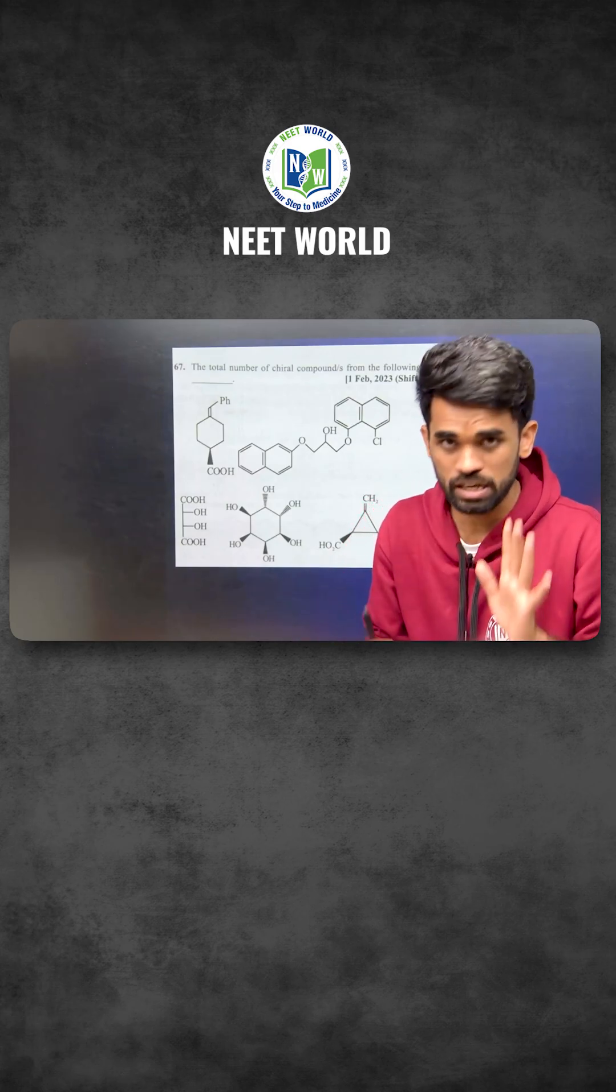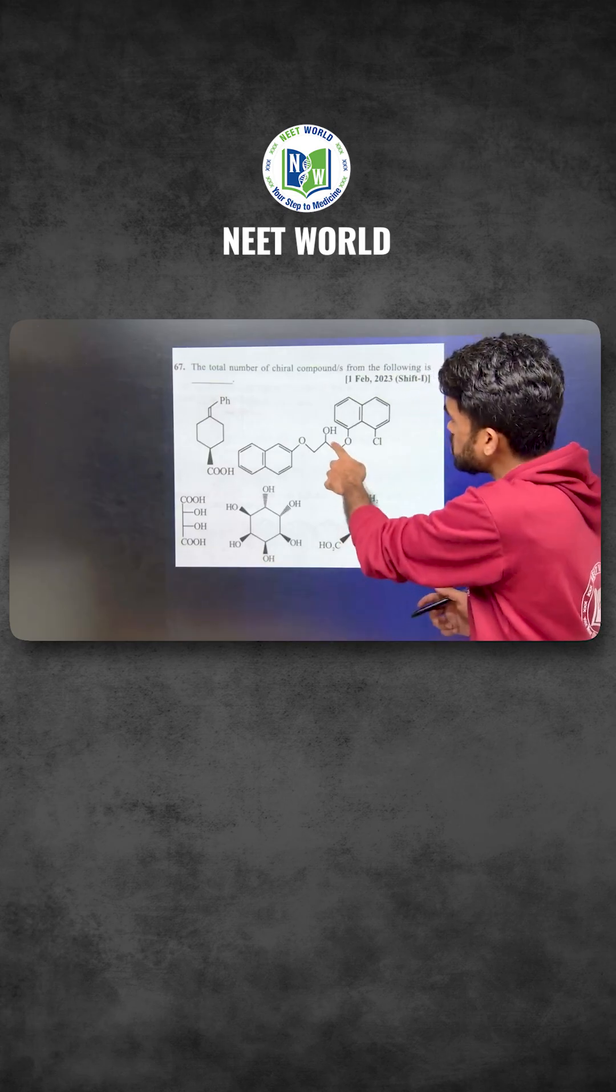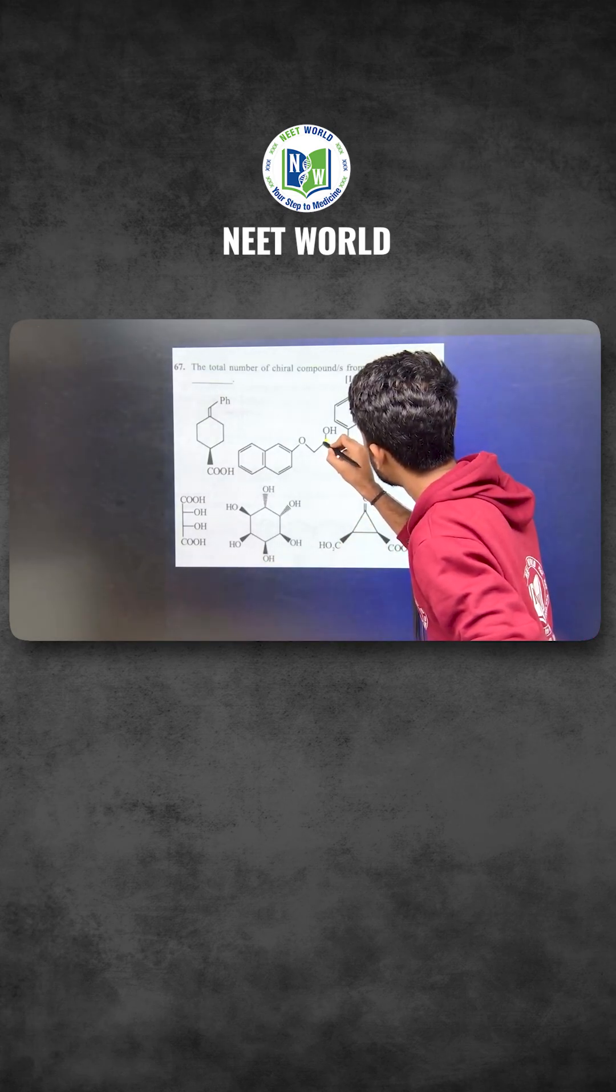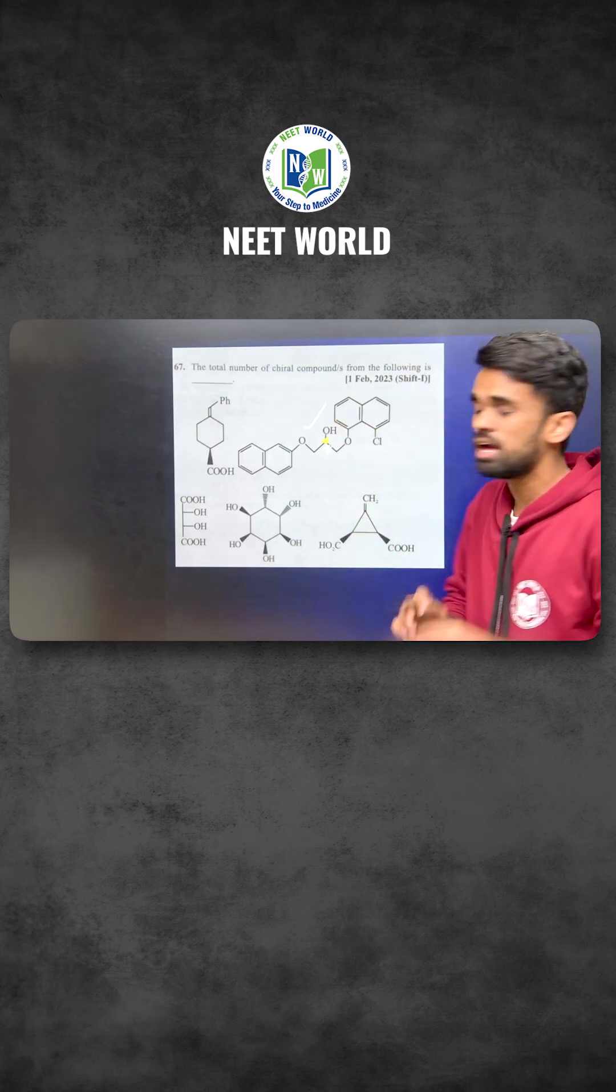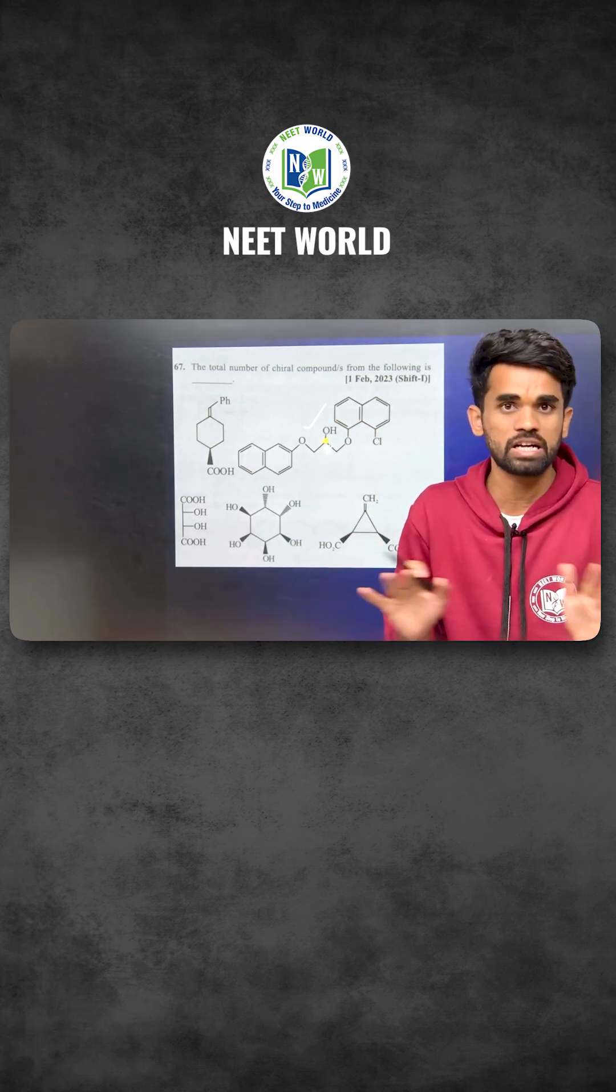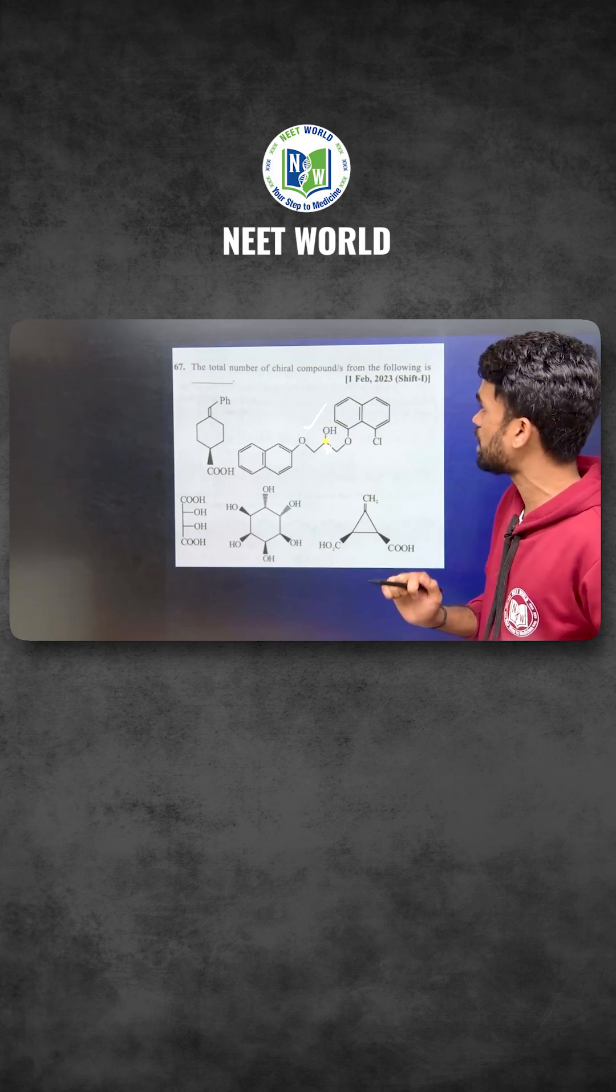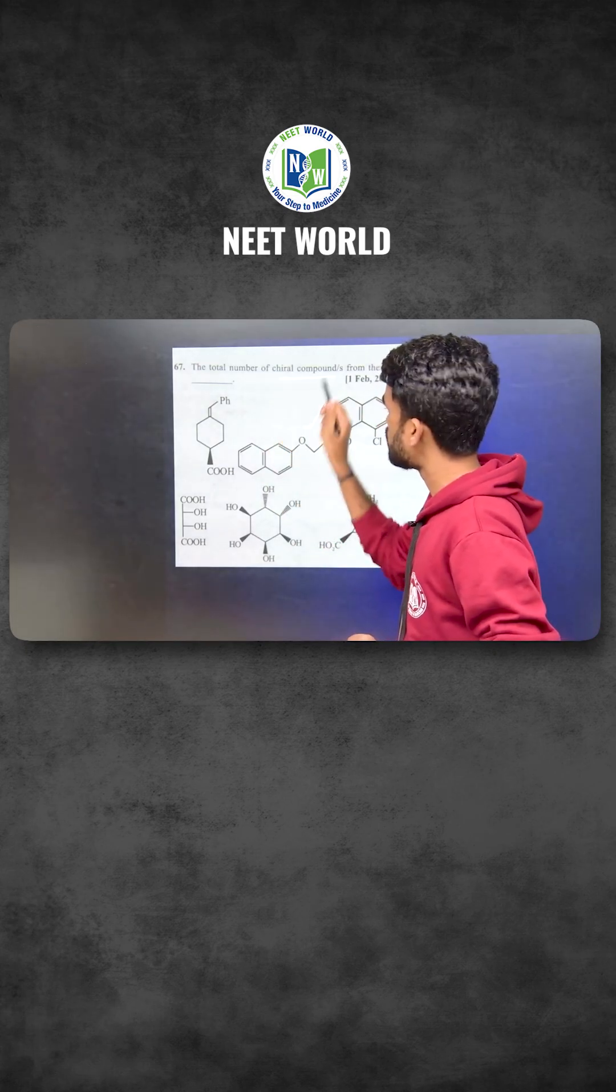Look at option B. Here is having a carbon having four different groups, so I can say this is a chiral center present in the compound and has no plane of symmetry or center of symmetry. Therefore it is optically active and I can say it's a chiral compound.